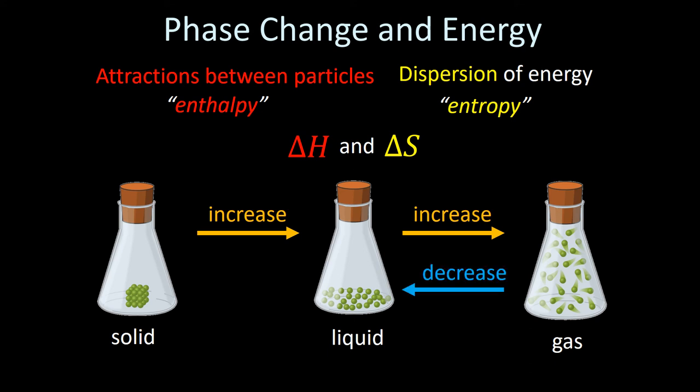When you go in the other direction, there is the same magnitude but the opposite sign. So when you go from a gas to a liquid — also known as condensation — the heat needs to come out, and as a result that energy is less dispersed. These values are going to be the same magnitude as going from a liquid to a gas, but opposite in sign. A similar thing happens when you go from a liquid to a solid.